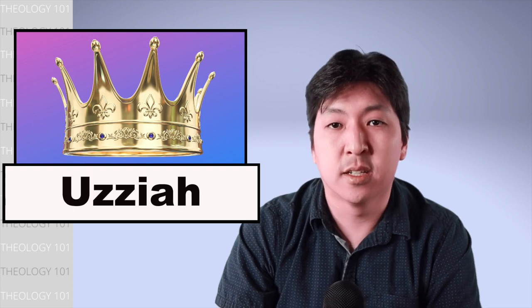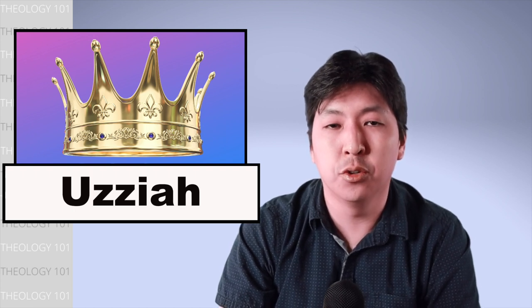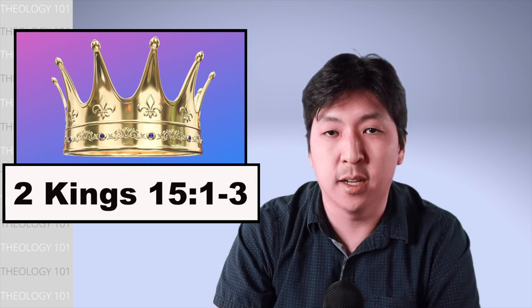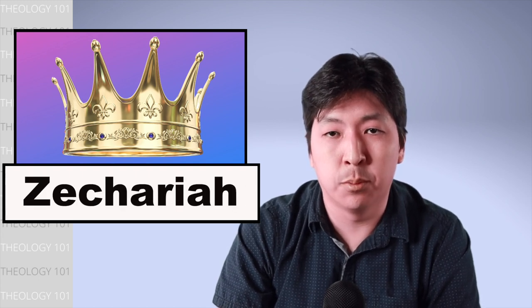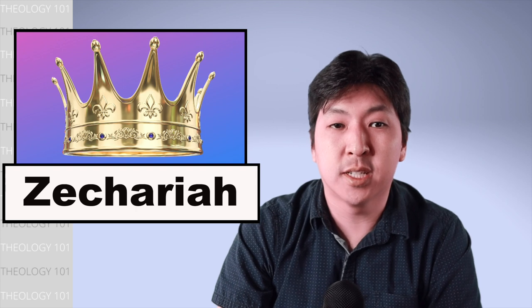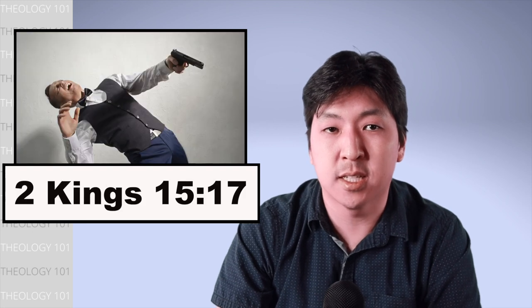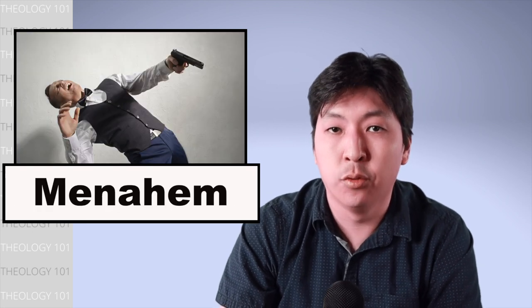Azariah, or Uzziah, the son of Amaziah, became king of Judah, and he reigned for fifty-two years and did what was right in God's eyes. While Zechariah, the son of Jeroboam II, ruled Israel for six months until he was assassinated by Shallum, who ruled for only one month, before he was assassinated by Menahem, who ruled for ten years.